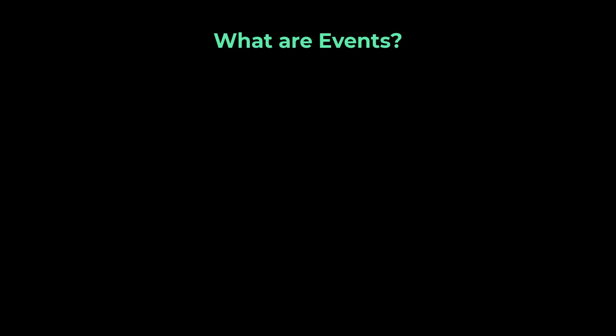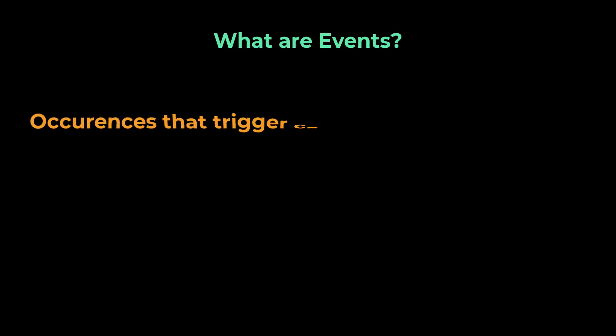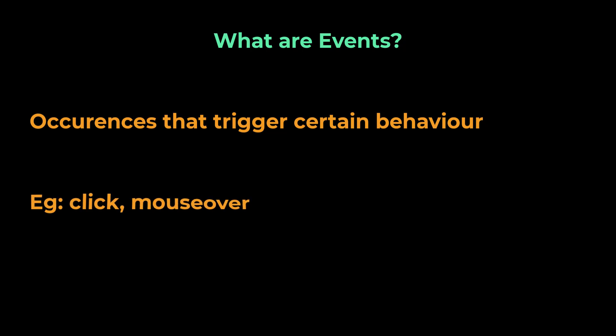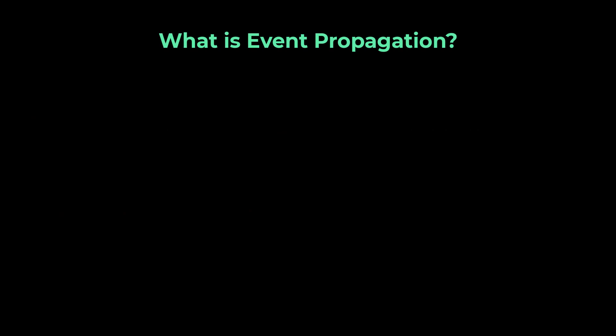First, what are events in JavaScript? Events are occurrences that can trigger certain functionality and can result in certain behavior. For example, we have the click event, we have the mouseover event, and so on. Now, what is event propagation?